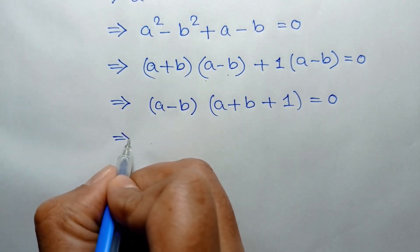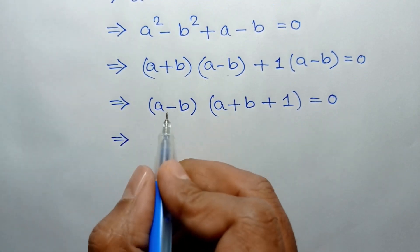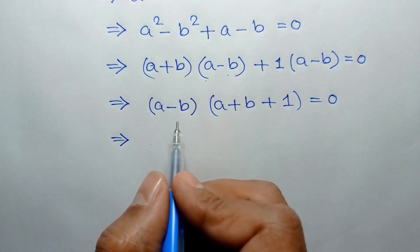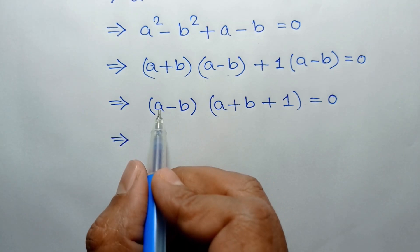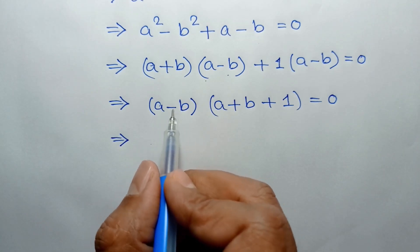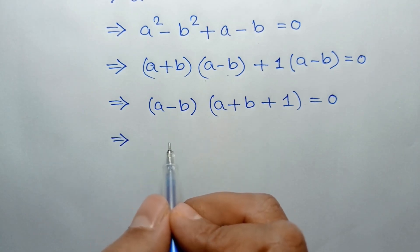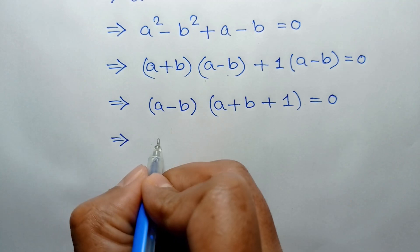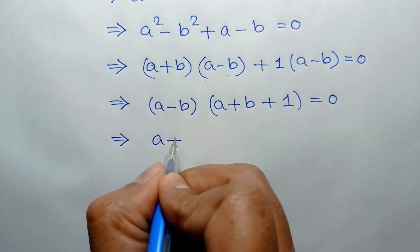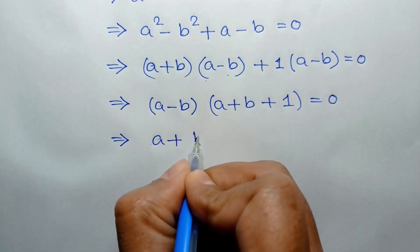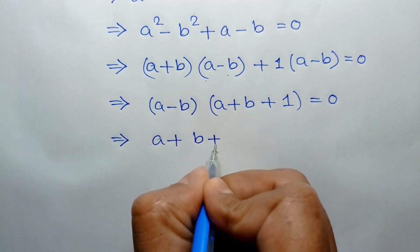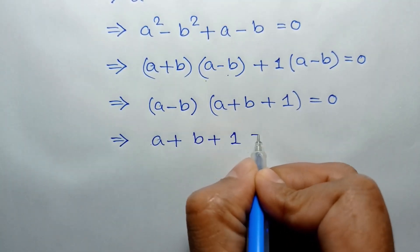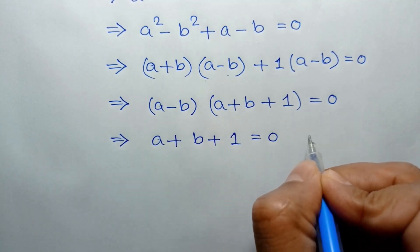Since A is not equal to B, A minus B is not equal to 0. So we can write A plus B plus 1 is equal to 0.